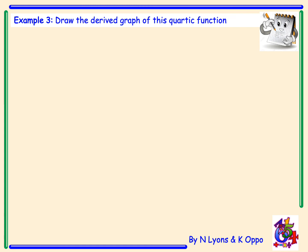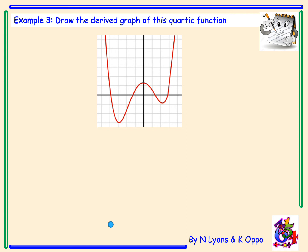Example 3: Draw the derived graph of this quartic function — something a bit fancier. Analysing the gradient: it starts with a negative gradient, the function decreasing. It reaches a minimum turning point — gradient equals zero. The function then increases, gradient is positive. Then a maximum turning point — gradient equals zero — and the function decreases again. Then another minimum turning point — gradient equals zero — and the function increases again. So the gradient goes negative, zero, positive, zero, negative, zero, positive.